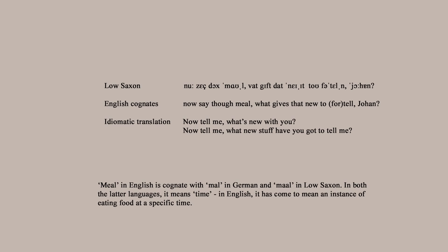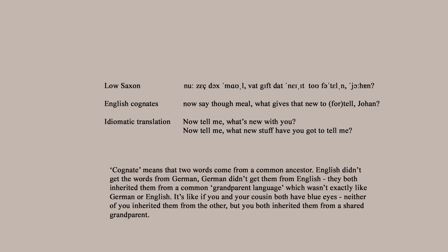A third recording he did was in a separate language spoken in the same area called Low German or Low Saxon. Taxonomically speaking it's more closely related to Dutch than it is to German, but it's semi-mutually comprehensible to German speakers, particularly ones from the north. Low German actually has a lot more in common with English than standard German does, phonologically speaking, because it was even less hard hit by the High German consonant shift. So 'nu' is cognate with 'now,' 'sech' is cognate with 'say,' 'wat gift dat' is cognate with 'what gives that,' 'to' is cognate with 'to,' and 'tellen' in 'vertellen' is cognate with 'tell' in English. You could say this is to German what very broad Scots is to English.